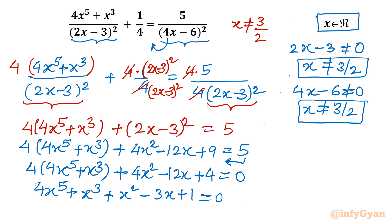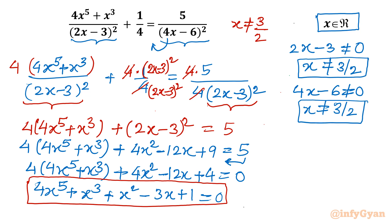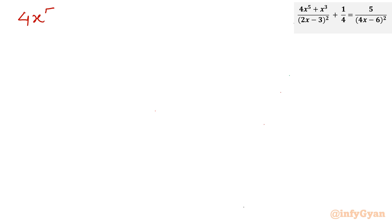So what is our equation now? It is a quintic polynomial of degree 5, so we are going to find 5 solutions of this equation. Let me write it: 4x power 5 plus x cube plus x squared minus 3x plus 1 equals 0.